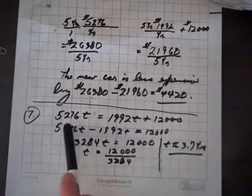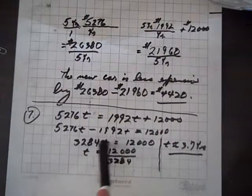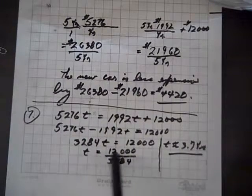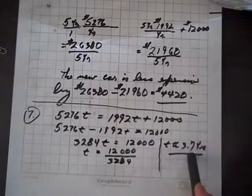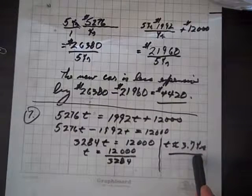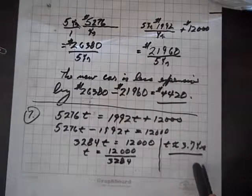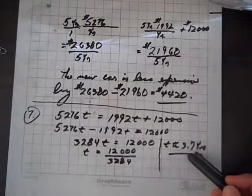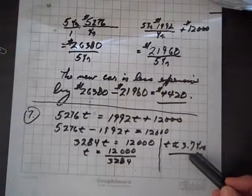So when we get all the t's on one side, everything else on the other, find the difference of the two, which we did, and then isolate t, we've got $12,000 divided by $3,284. And so after 3.7 years, that's when the cost of owning the old car and the cost of owning the new car are at an equilibrium.